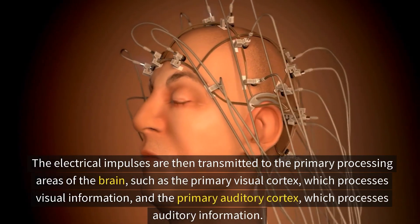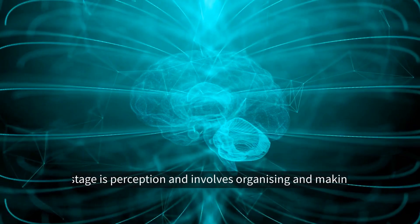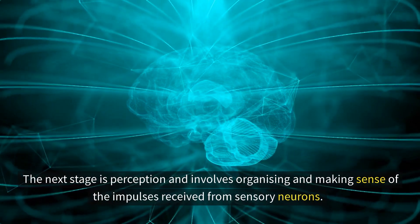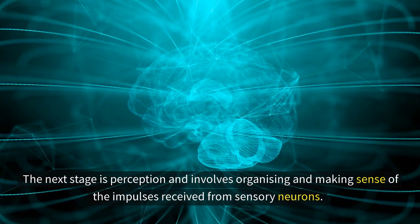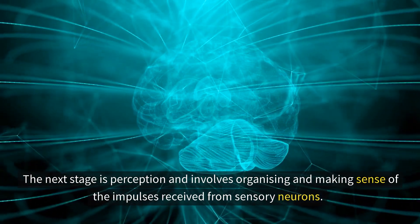These primary processing areas include the primary visual cortex, which processes visual information, and the primary auditory cortex, which processes auditory information. The next stage is perception, which involves organizing and making sense of the impulses received from sensory neurons.